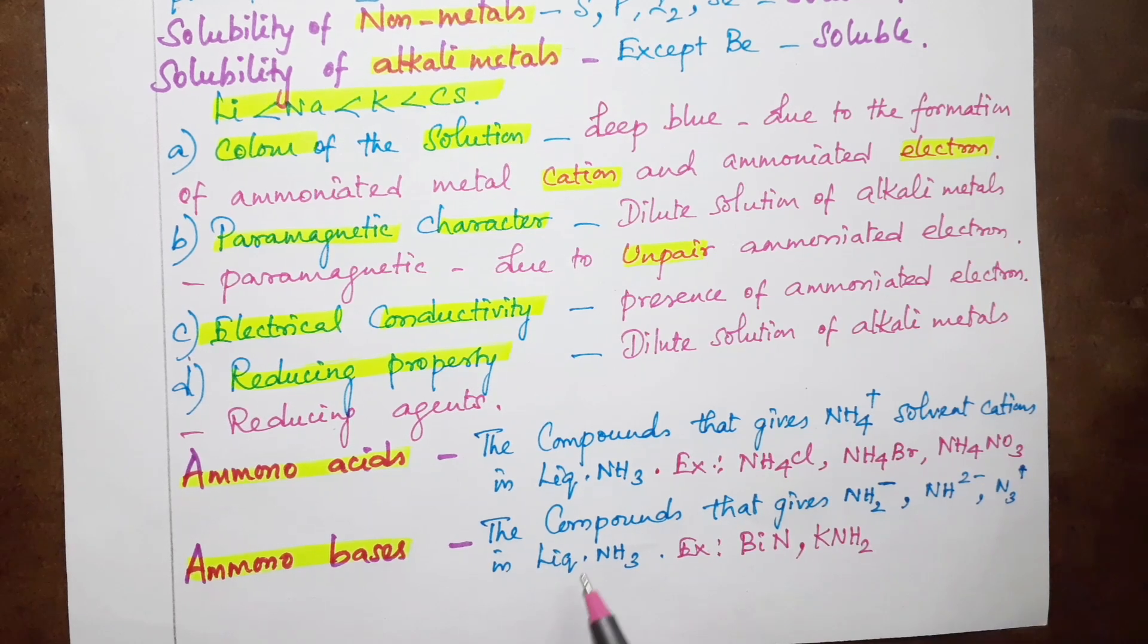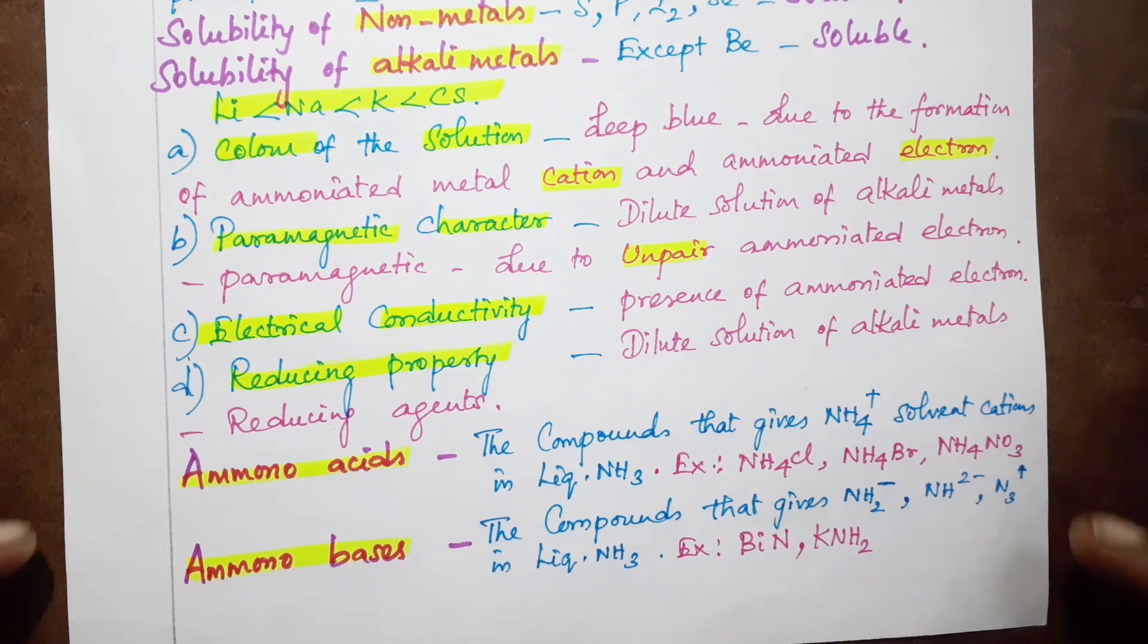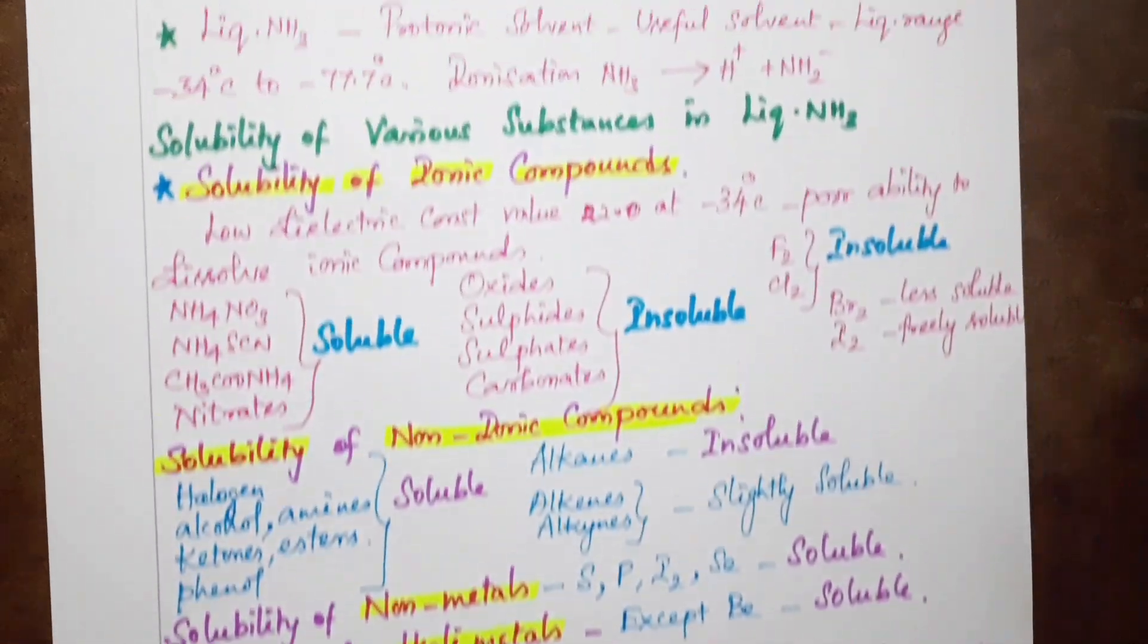For example, potassium amide KNH2, this compound is used as ammono base.